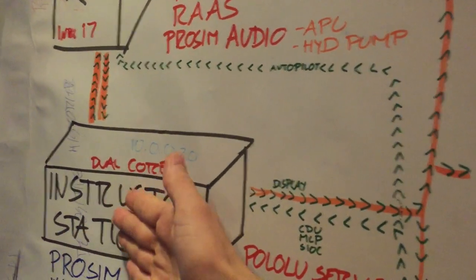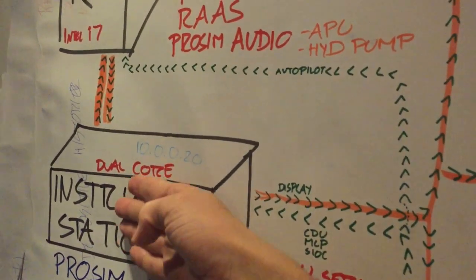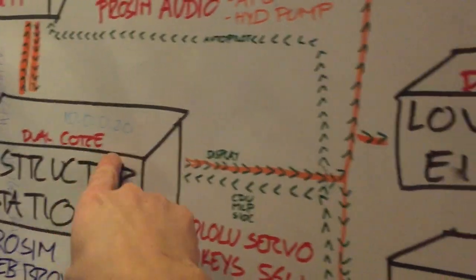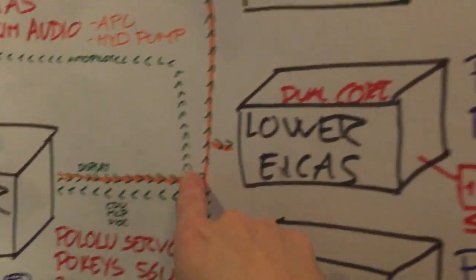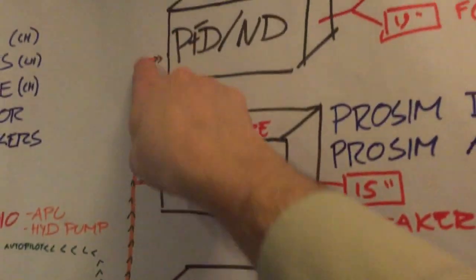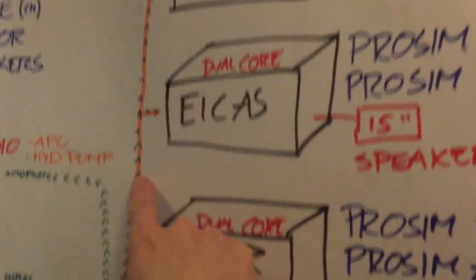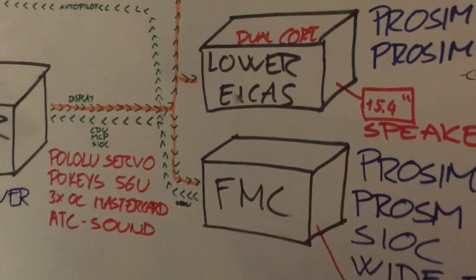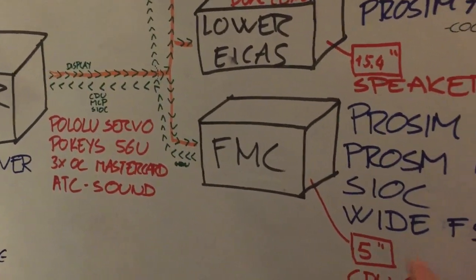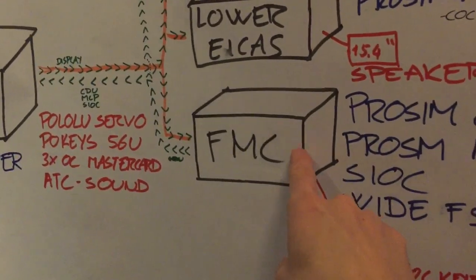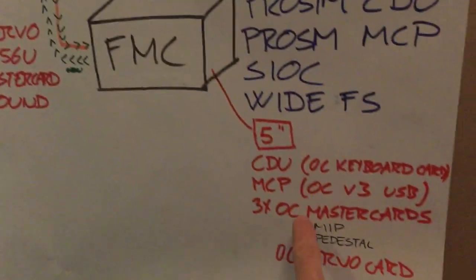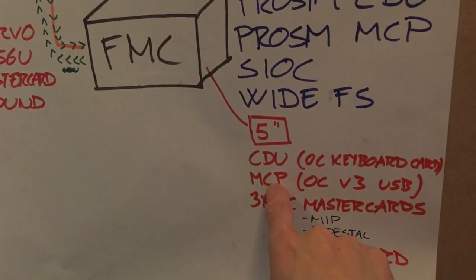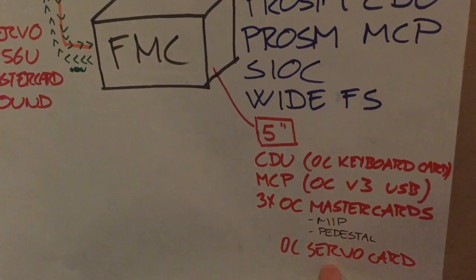The instructor station communicates with the main PC, and from there signals go out to the different computers. There is also a bit of backflow of information from this computer.